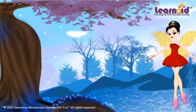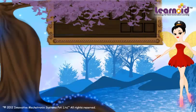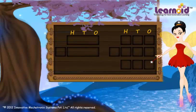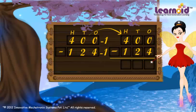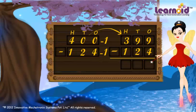Let's see another method for this type of subtraction. The first number is 400 and the second number is 124. Subtract one from both numbers: four hundred minus one is three hundred ninety-nine, and one hundred twenty-four minus one is one hundred twenty-three.